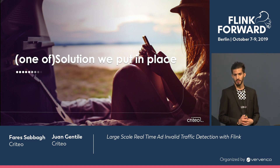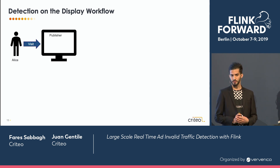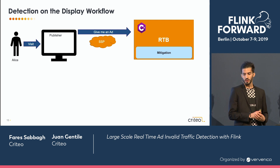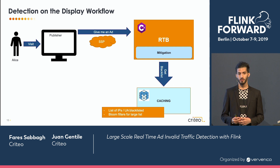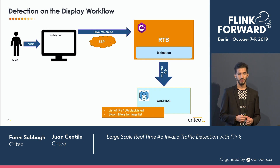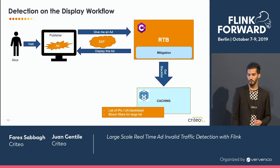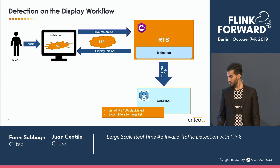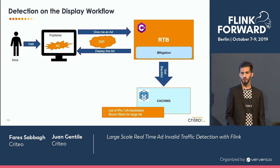I will now explain one of the solutions we put in place to defeat the fraudsters. Imagine you have Alice browsing some publisher websites. The publisher website will ask Criteo to buy the traffic to be able to put an ad on it. What we do is check if the user is suspicious or not. To do that, we do a lookup into a cache that contains all kinds of information about the user: IPs, user agents, UIDs, and so on. If the user is not blacklisted, then we will display the ad. The main question here is: how do we fill this cache?